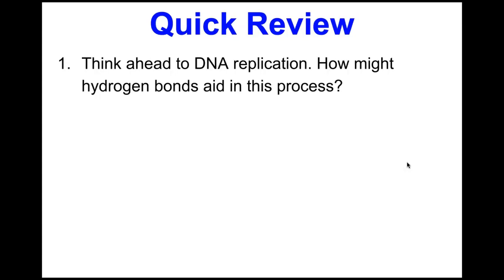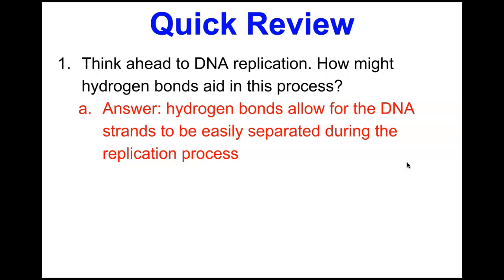Thinking ahead to DNA replication: how might the hydrogen bonds aid in this process? The fact that hydrogen bonds are weak allows DNA strands to be easily separated during replication. Those weak bonds can be pulled apart to expose the nucleotides so that the parental strands can be copied to form two new strands.